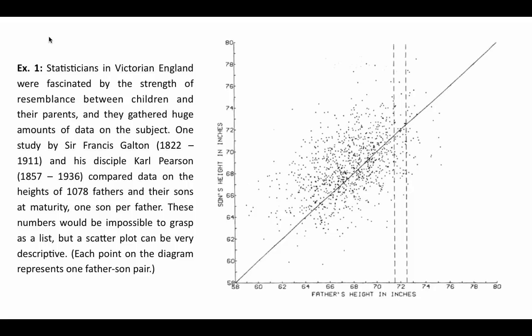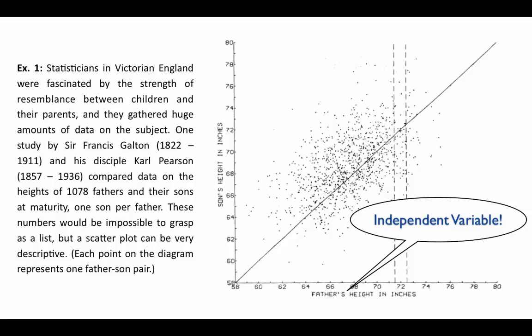We can see an upward trend in this data — 1,078 fathers and sons in the dataset. As a list we couldn't recognize this, but a scatter plot is much more descriptive. If you were to draw an oval around the data cloud, the oval would have an upward tilt. The skinnier the oval, the closer the points are to the line and the better the line would be at predicting. The shape of the data cloud is an upward-sloping, linear relationship. Fathers' height is the independent variable; sons' height in inches is the dependent variable.